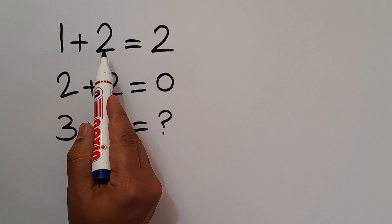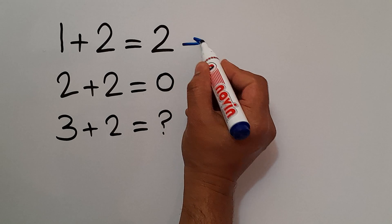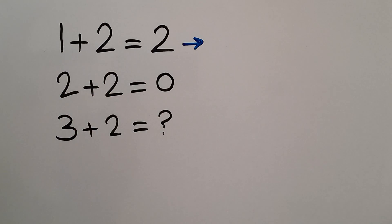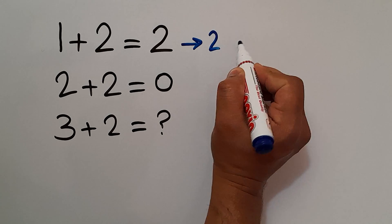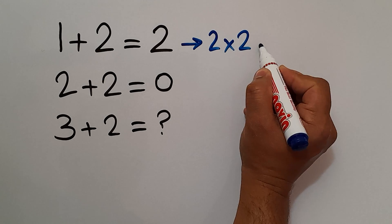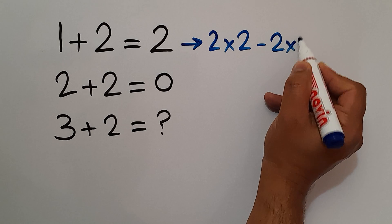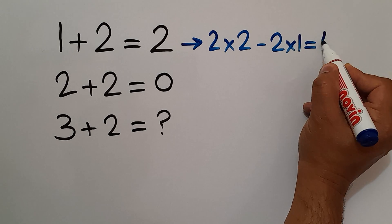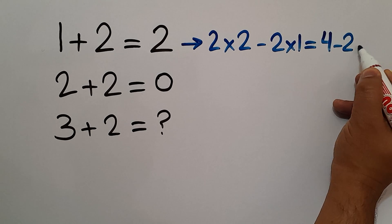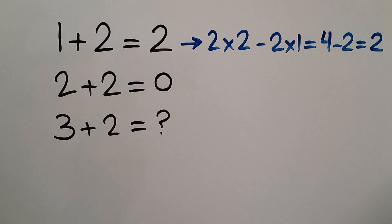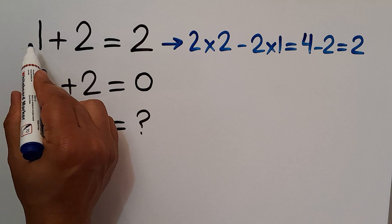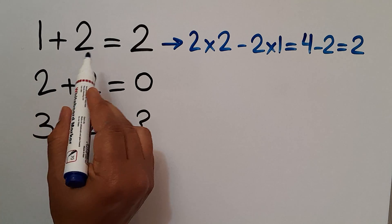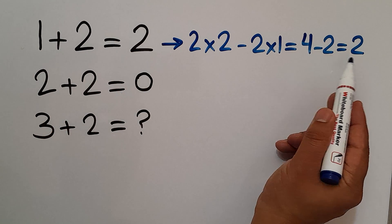In the first line, we have 1, 2, and 2. 2 times 2 minus 2 times 1 equals 4 minus 2, which equals 2, the right-hand side number.